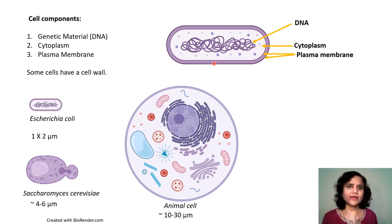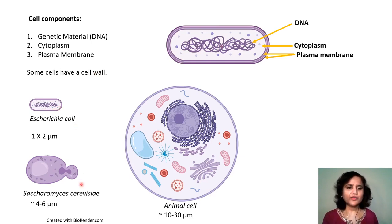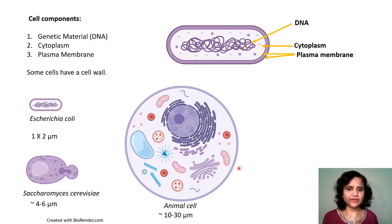Some cells also have a cell wall, such as fungi or plant cells. There are other cells known as eukaryotes in which the genetic material is enclosed in a compartment known as the nucleus, which is a membrane-bound compartment. Examples include E. coli as a prokaryote, Saccharomyces cerevisiae as a budding yeast eukaryote, and an animal cell, which is much larger than the other two.